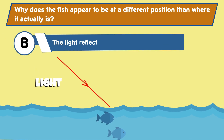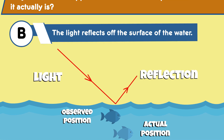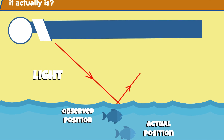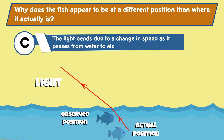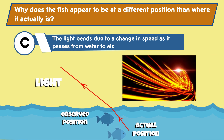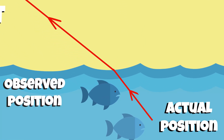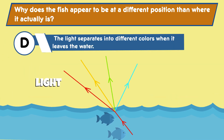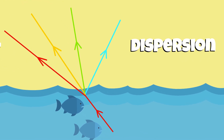Answer choice B: the light reflects off the surface of the water. Quick tip — consider how reflection would change the appearance of the fish. Would the fish look different if the light was bouncing off the surface instead of passing through it? Answer choice C: the light bends due to a change in speed as it passes from water to air. Quick tip — understand how the speed of light changes when moving between different mediums. How does this bending of light affect the observed position of the fish? Answer choice D: the light separates into different colors when it leaves the water. Quick tip — remember the concept of dispersion. How does the separation of light into different colors differ from the bending of light due to refraction?